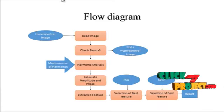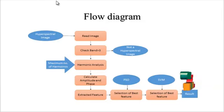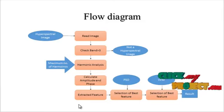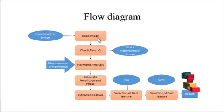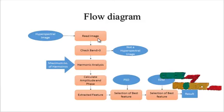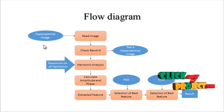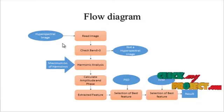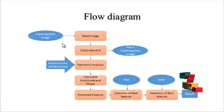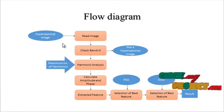Now we are going to discuss the flow diagram for the process. This is the overall working flow. First, the input hyperspectral image is read from the dataset folder. The hyperspectral image consists of several bands — for example, 100 to 120 bands within a single image.